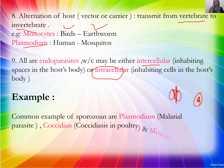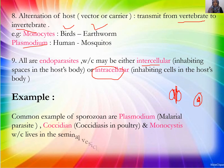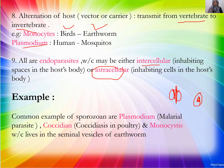An example is Coccidia which causes coccidiosis in poultry. Another example infects dogs. Monocystis infects the seminal vesicles of earthworms — the reproductive part of the earthworm. These are common examples of Sporozoa.